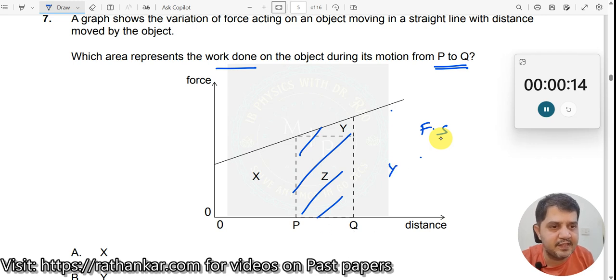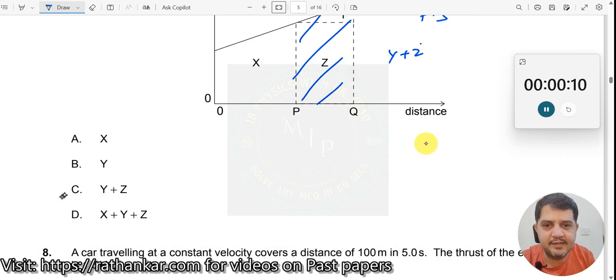Therefore, Y plus Z should be the answer. Y plus Z, where is it? It is here. Answer is C.